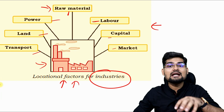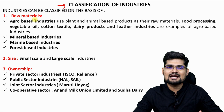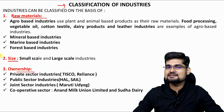Classification of industries — since we are talking about the secondary sector and industries lead within it — classification is based on three types: raw material, size and ownership. These are the three words you have to remember.